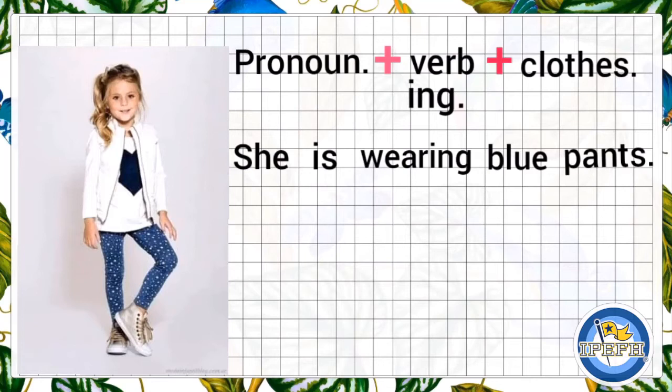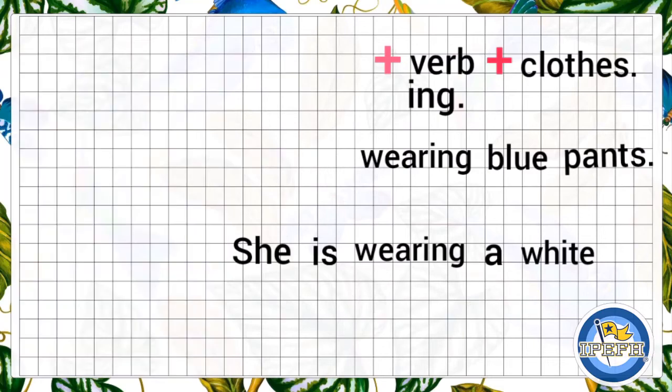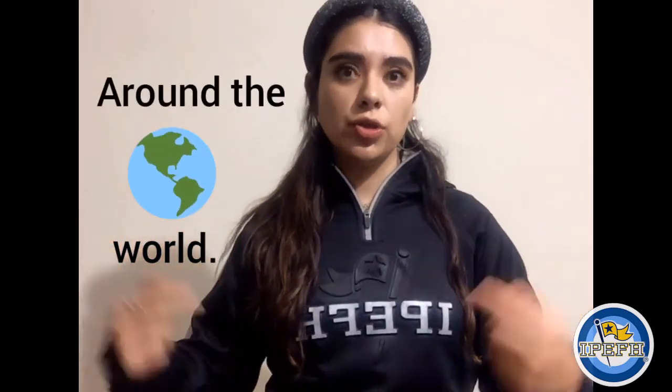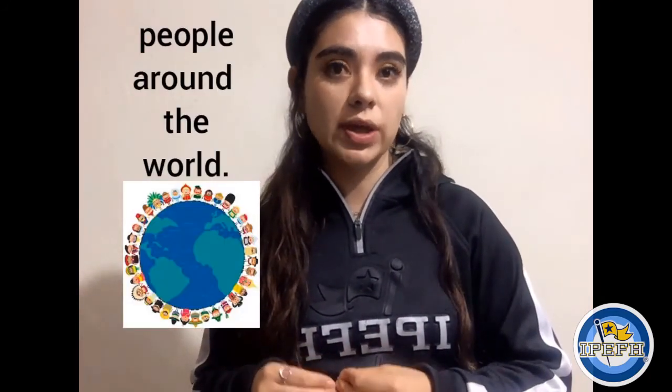Let's describe together her t-shirt. She is wearing a white and black t-shirt. Now, to be more clear and give you more examples, I will show you some typical clothes around the world. Do you know that people around the world and in every country wear typical clothes? Let's see what the people wear in five countries. Come with me and watch together.